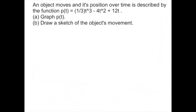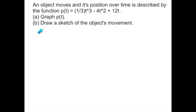One of the most classic applications: there's an object moving and its position changes over time. At different times we get different positions, as described by this function. The function is p(t) = (1/3)t³ − 4t² + 12t. Let's graph the position function, and also make a sketch of what the object's movement looks like over time.